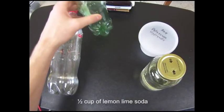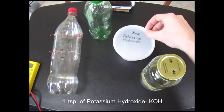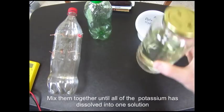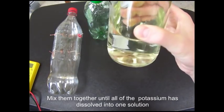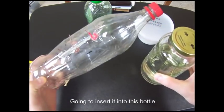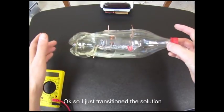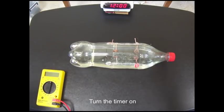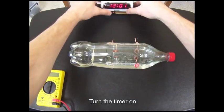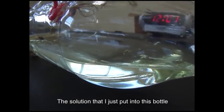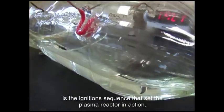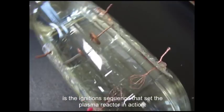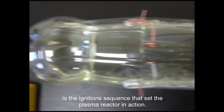Okay, so I just created the solution, lemon-lime soda, potassium hydroxide, mixing together until all of the potassium is dissolved into one solution. I'm going to insert it into this bottle. Okay, so I just transitioned the solution, turn the timer on. The solution that I just put in this bottle, that is the ignition sequence that sets the plasma reaction in action.